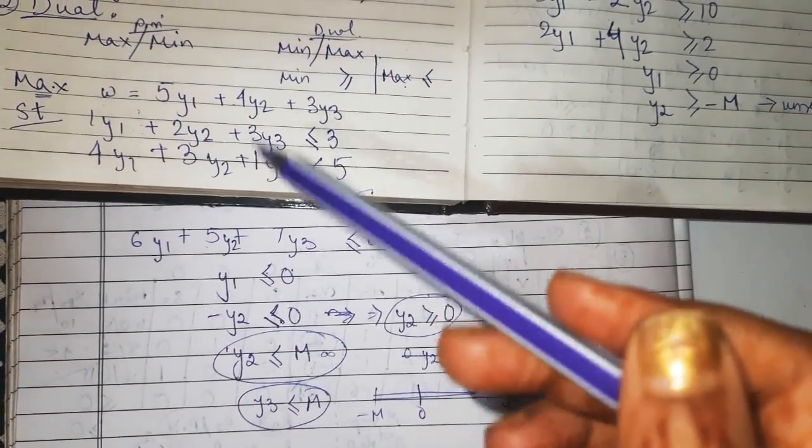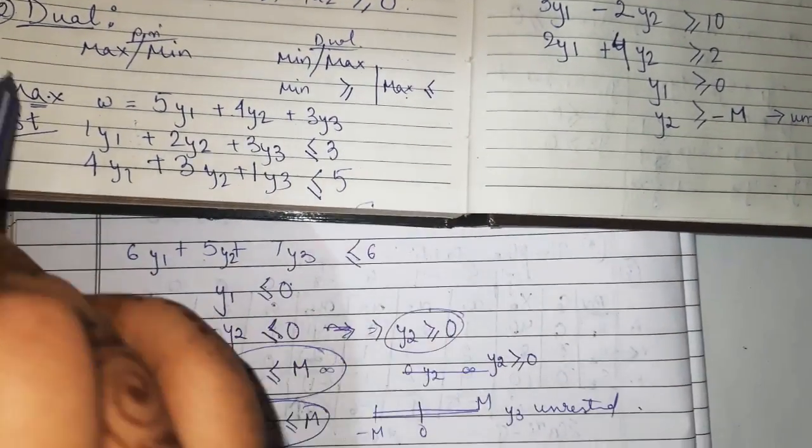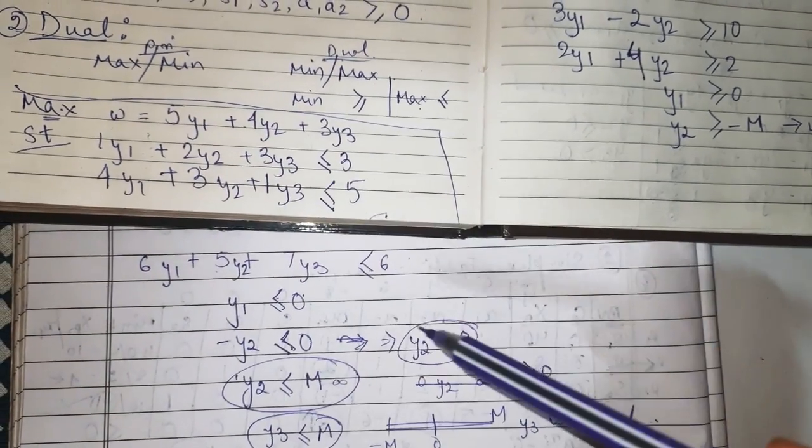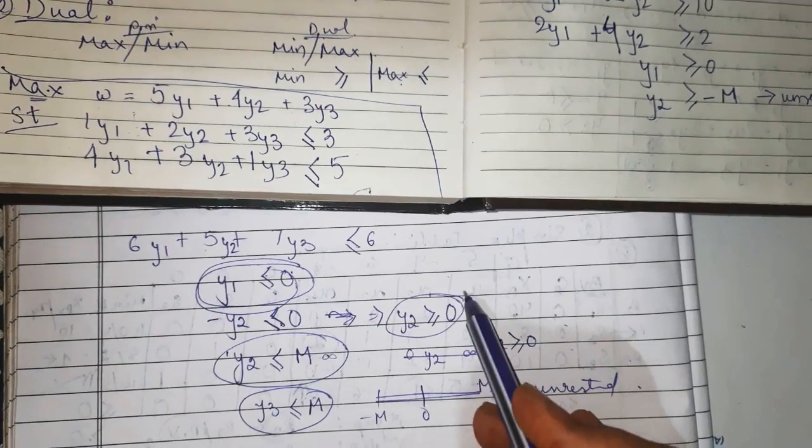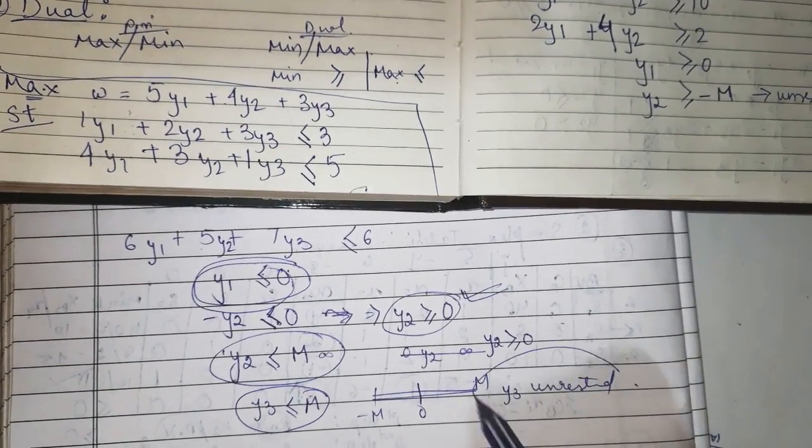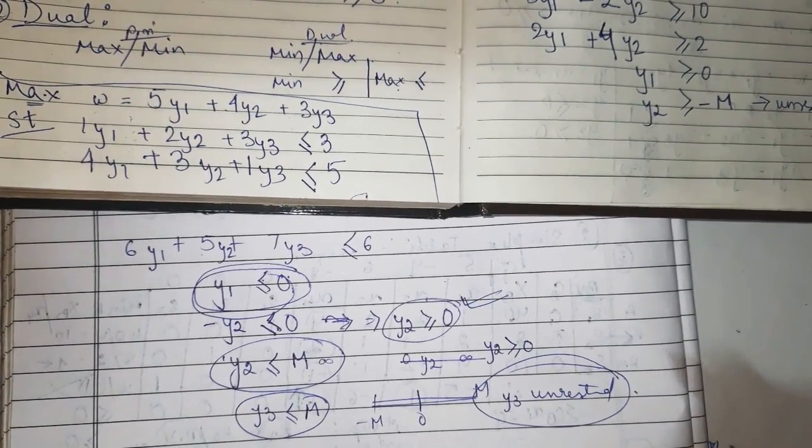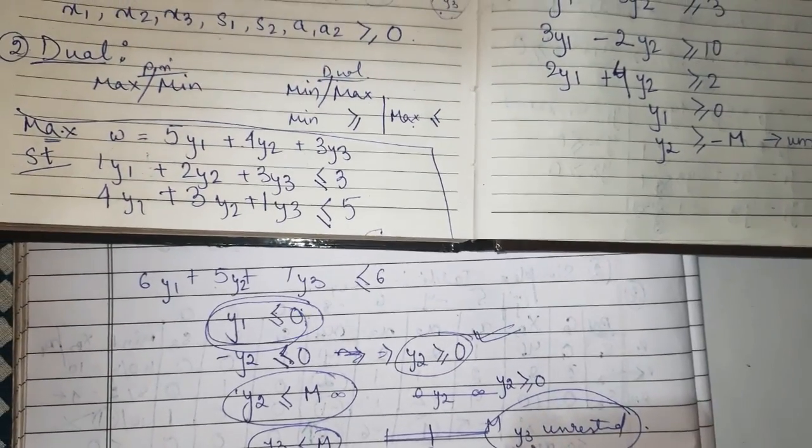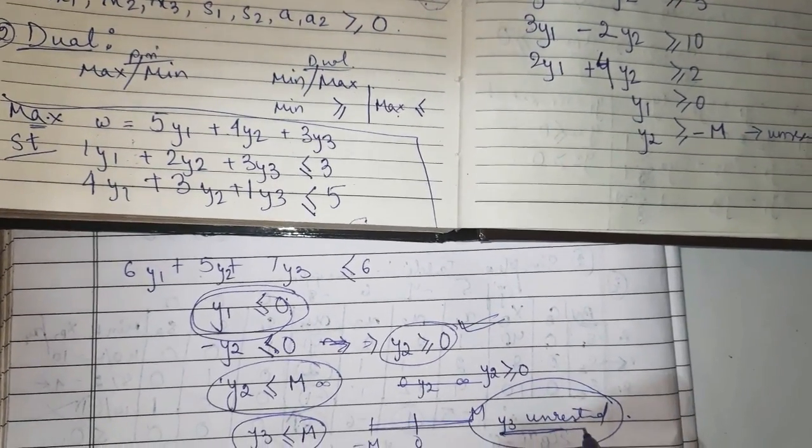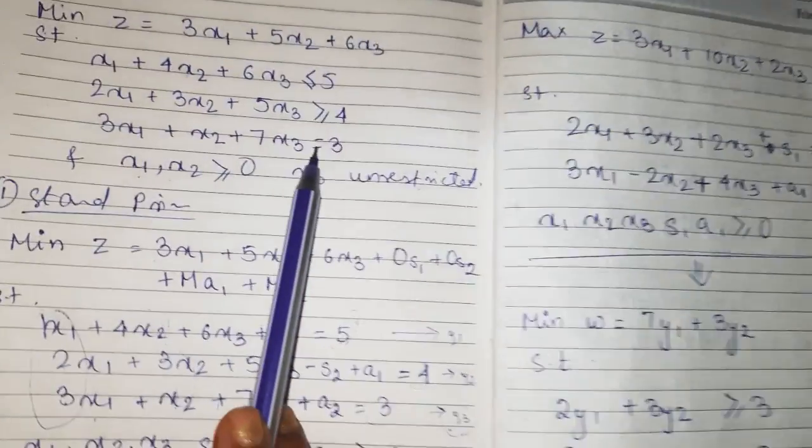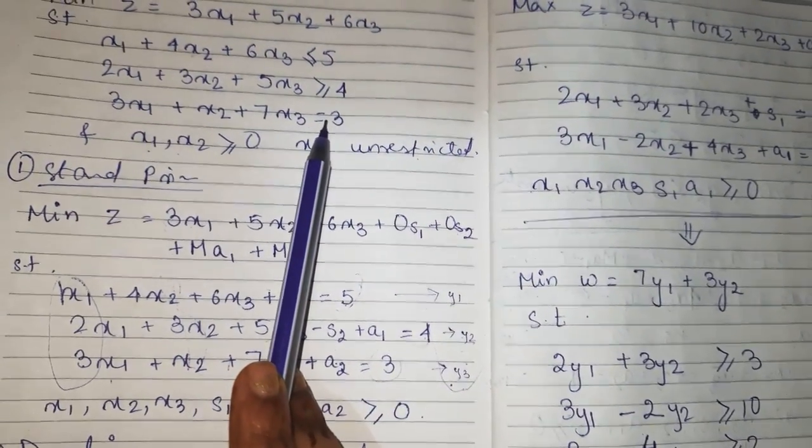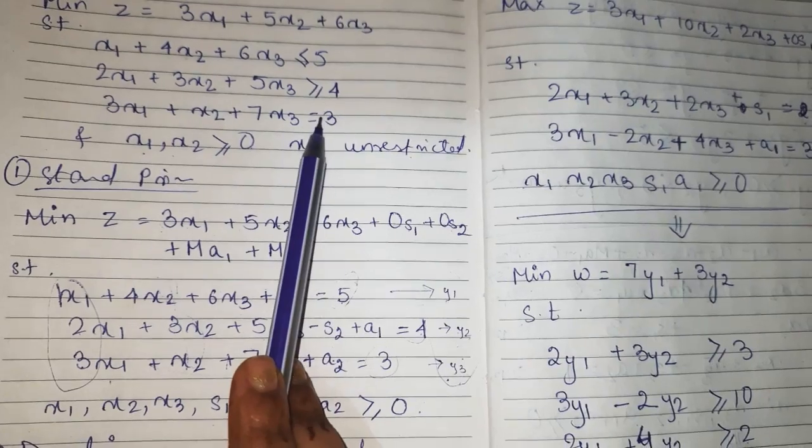So this is the whole dual form where y1 is less than or equal to 0, y2 is greater than or equal to 0, and y3 is unrestricted. We can also cross check because y3 is unrestricted in the primal, and in the question we have an equal to constraint.